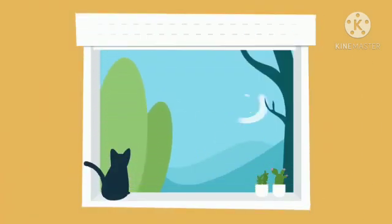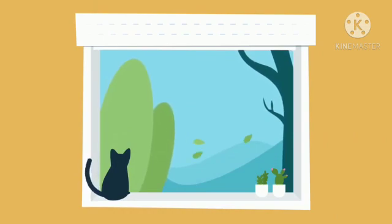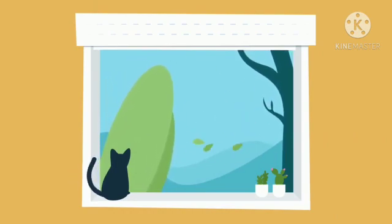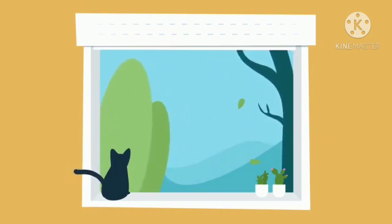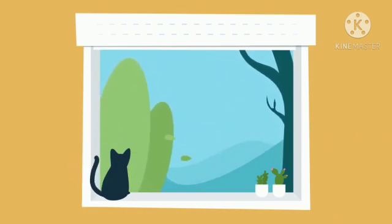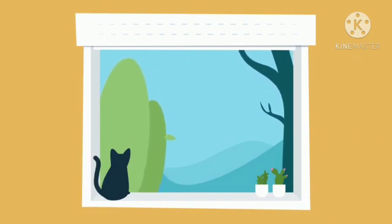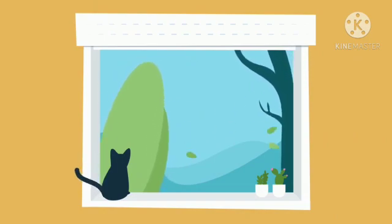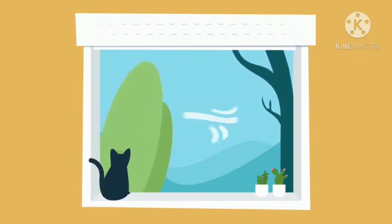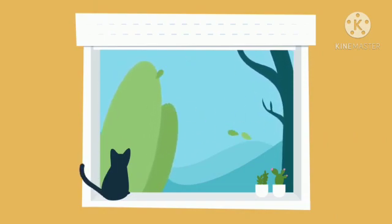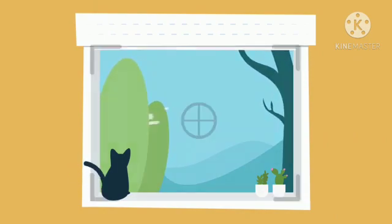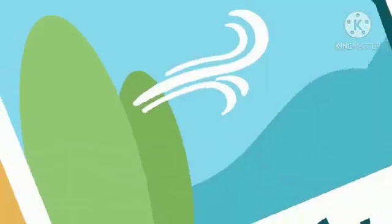What do you see through the window? The trees are moving and the wind is blowing heavily. When you see things moving or flying around in the street, that's because it's windy.